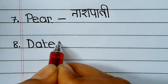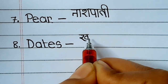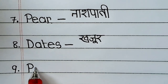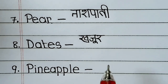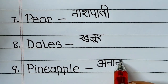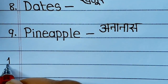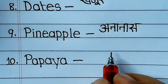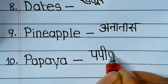D-A-T-E-S, dates means khujur. P-I-N-E-A-P-P-L-E, pineapple means angur. P-A-P-A-Y-A, papaya means papita.